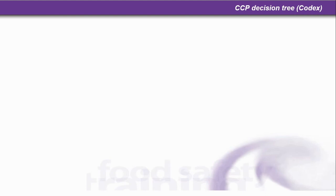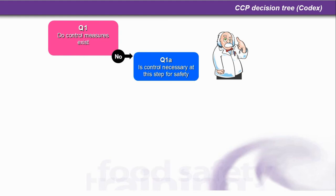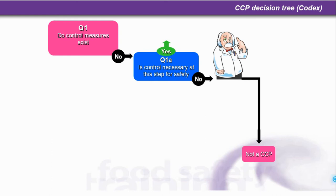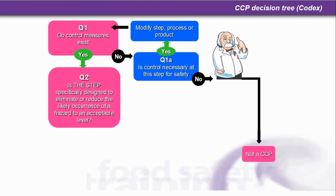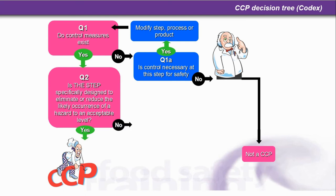Let's have a look at the Codex CCP decision tree — pretty complicated, but we'll go through it. It starts off with a series of questions. Question 1: do control measures already exist? If the answer is no, question 1a: is control necessary at this step for safety? If the answer is no, it's not a CCP. If the answer to question 1a is yes, then you need to modify the step, process, or product, and cycle back to question 1. If the answer to question 1 is yes — control measures do exist — then you ask question 2: is the step specifically designed to eliminate or reduce the likely occurrence of a hazard to an acceptable level? If the answer is yes, it's a critical control point.